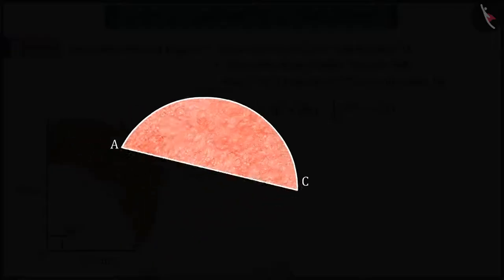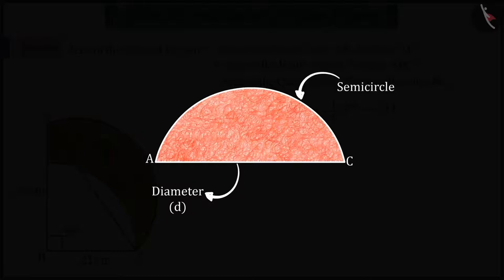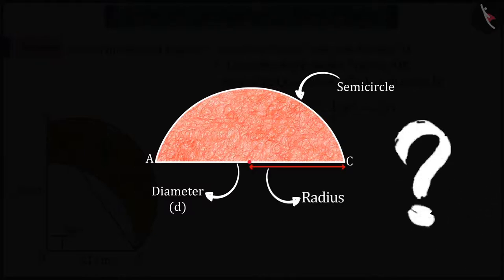So, let's first discuss the semicircle with diameter AC. To find the area of the semicircle, we need to know its radius. But this is not known to us. So, let's find the value of the radius.